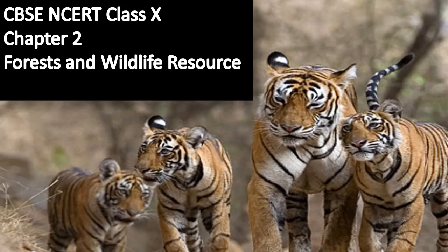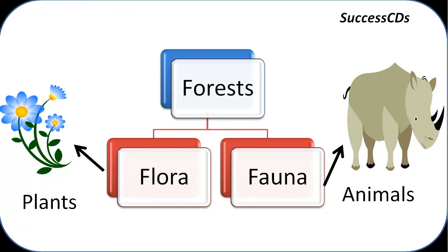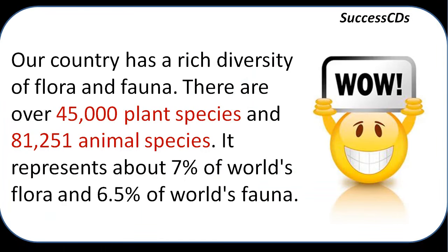Hello everyone, SuccessCities is back with another video. This time we are going to discuss Chapter 2, Forest and Wildlife Resources of CBSE NCERT Class 10. Let's see how forest is a resource for us. Forests are broadly classified into flora, i.e. the plant species, and fauna, i.e. the animal species. Our country has rich diversity of flora and fauna — over 45,000 plant species and 81,251 animal species, representing about 7% of world flora and 6.5% of world fauna.